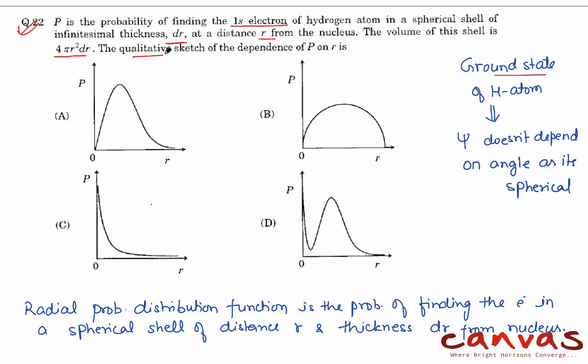We have to find out the qualitative sketch, that is how the probability value varies with distance from the nucleus. It is a very good question. To start with, we have to consider that ground state of hydrogen atom means your wave function doesn't depend on angle because it is spherical.